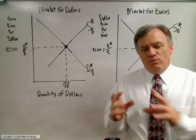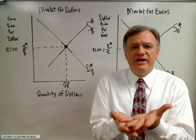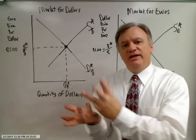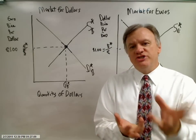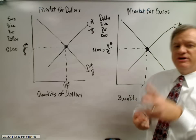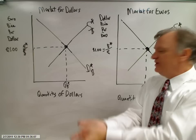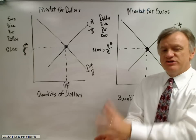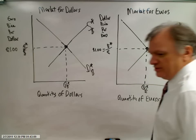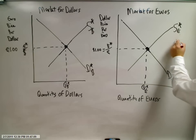Europeans want to invest in the United States, but they have euros. What's a European to do? They're going to have to go to the foreign exchange market and exchange their euros for dollars. So in the foreign exchange market, what is changing — the demand for euros or the supply of euros? Well, they're exchanging their euros for dollars, so the supply of euros is increasing in the foreign exchange market.